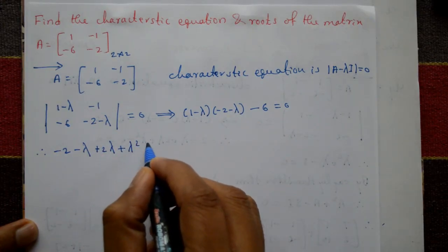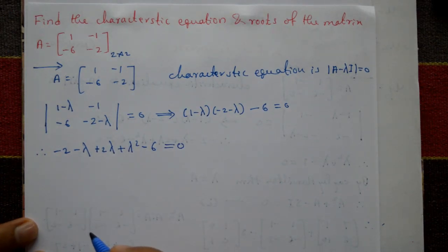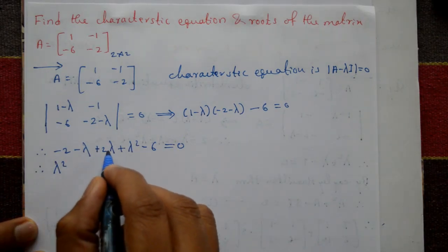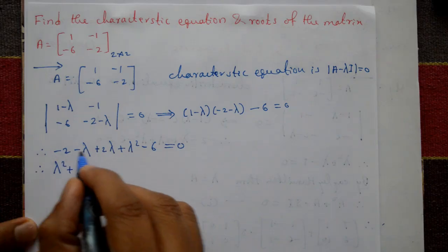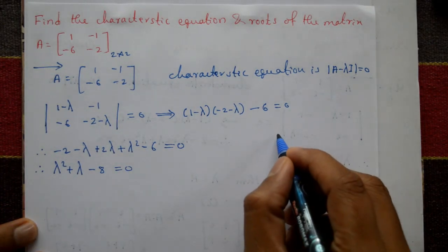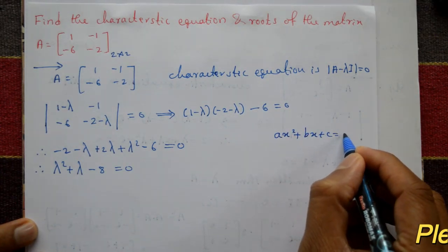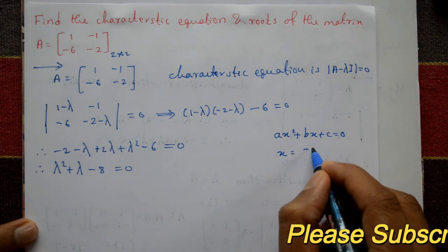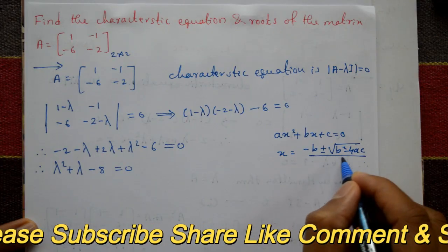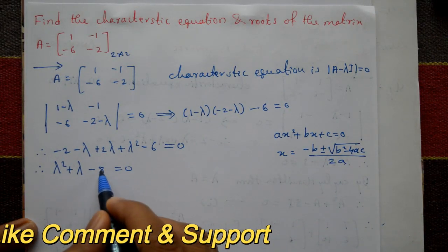Simplifying, we get λ² + λ − 8 = 0. This is a quadratic equation. Using the general quadratic formula x = (−b ± √(b² − 4ac)) / 2a, we identify a = 1, b = 1, and c = −8.